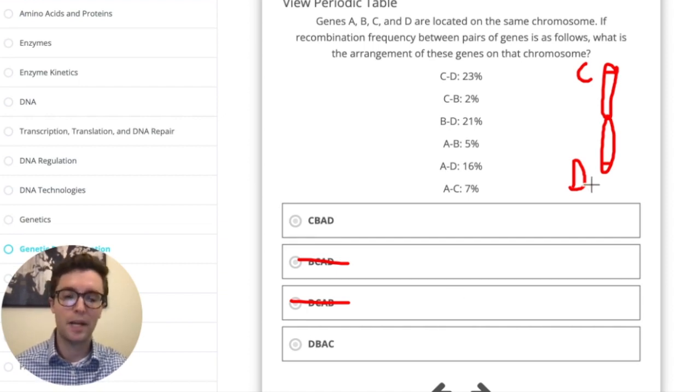The next step that I like to do is pick either C or D. So in this instance, let's pick D. Let's just compare D to the other two genes, A and B. Let's see. D and B have a recombination frequency of 21%, so that's pretty far apart. How about between D and A? Between D and A, there's a recombination frequency of 16%. So we know that A is closer to D than B is.